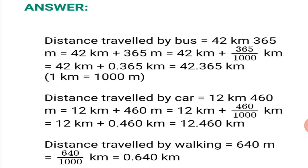So, let's see the solution. Distance traveled by bus is equal to 42 kilometers, 365 meters. You can show the conversion as shown here is equal to 42 kilometers plus 365 meters is equal to 42 kilometers plus 365 upon 1000 kilometers. Because, 1 kilometer is equal to 1000 meters which is equal to 42 kilometers plus 0.365. We convert it into decimal number is equal to 42.365 kilometers. Now, is it necessary to show this conversion? If you are able to do the direct answer, you can write it directly.